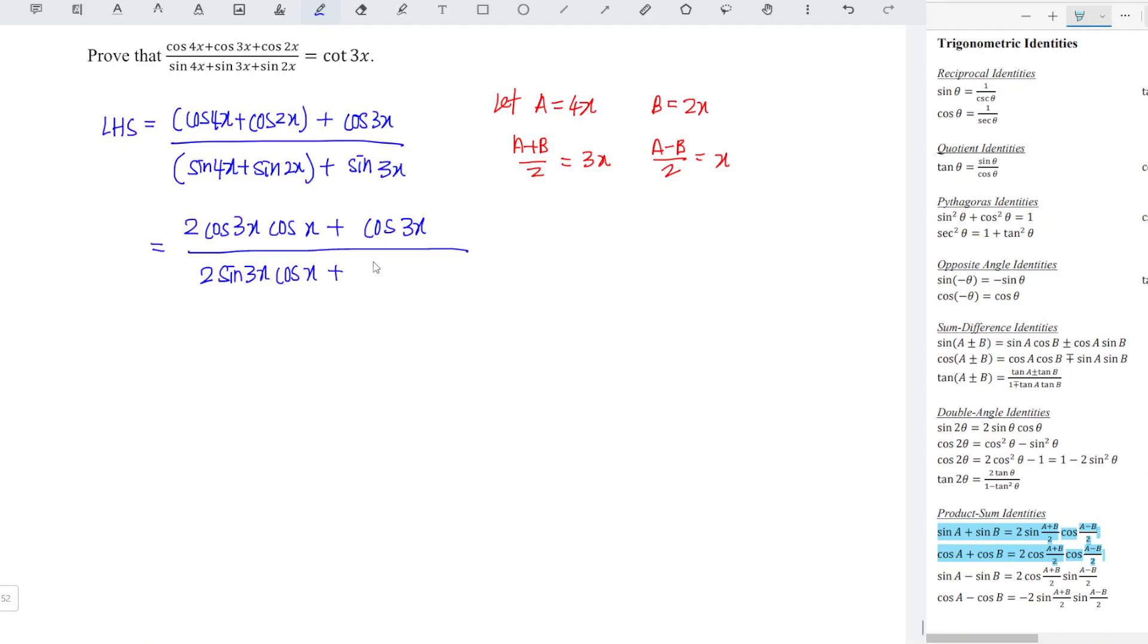And we factorize the common term. For the numerator we have cos 3x times 2 cos x plus 1. And for the denominator we have sine 3x times 2 cos x plus 1.